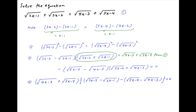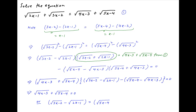This implies either √(4x-3) + √(5x-4) = 0 or √(3x-2) - √(2x-1) - [√(5x-4) - √(4x-3)] = 0. The first result implies √(4x-3) = -√(5x-4). Taking the square of both sides, we get 4x - 3 = 5x - 4, which implies x = 1.